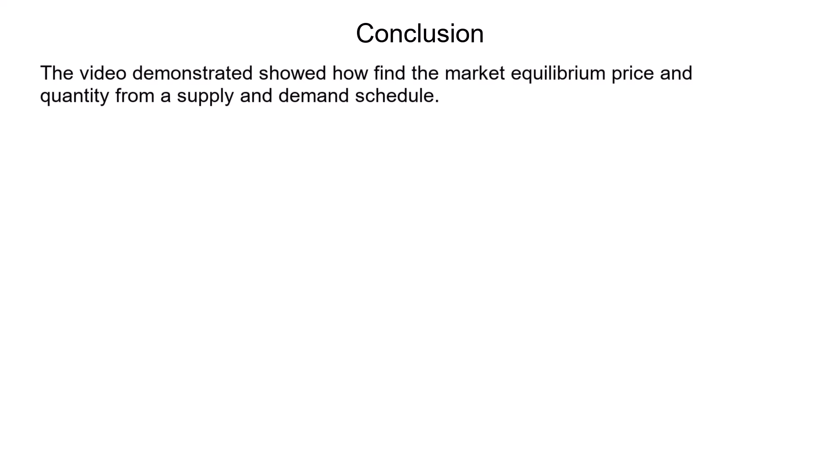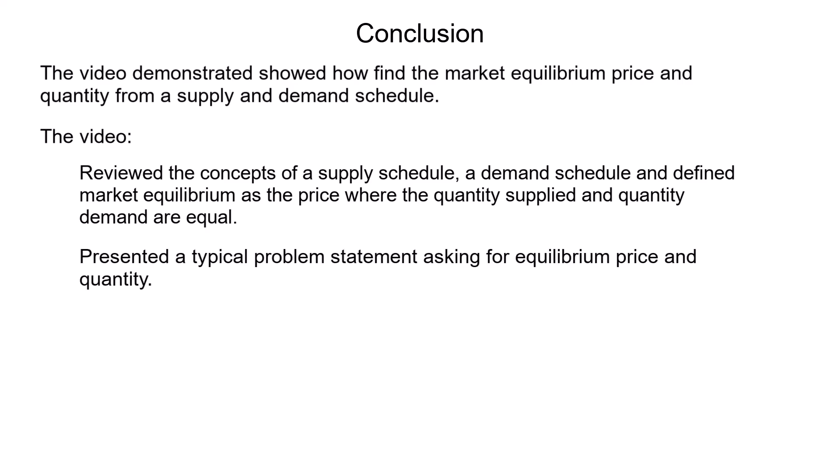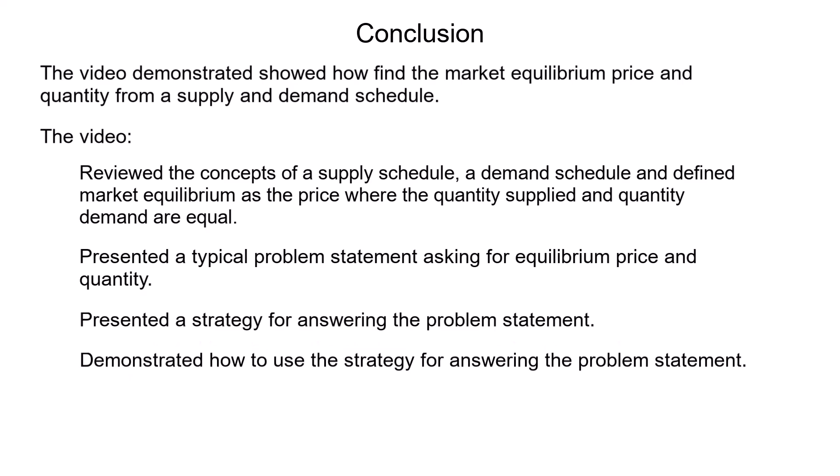This video looked at locating the equilibrium price and quantity on a supply and demand schedule. The video reviewed the concepts of supply and demand, and the criteria for market equilibrium — that is, the price where the quantity supplied and the quantity demanded are equal. Next, the video reviewed a typical problem statement for finding equilibrium price and quantity, and provided a strategy for finding the equilibrium by comparing the quantity demanded with the quantity supplied at each price. Once the point where the quantities were equal was found, it was easy to read off the equilibrium price from the price column of the table.